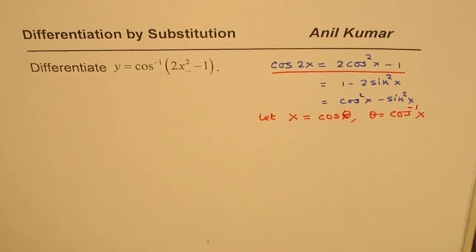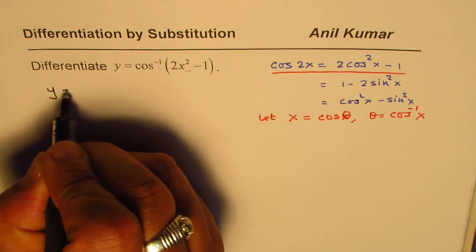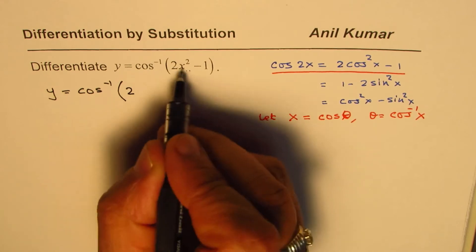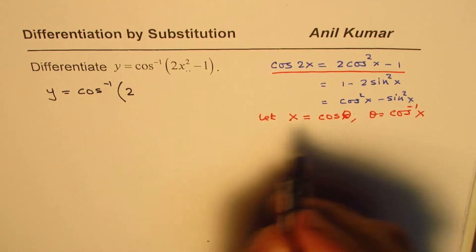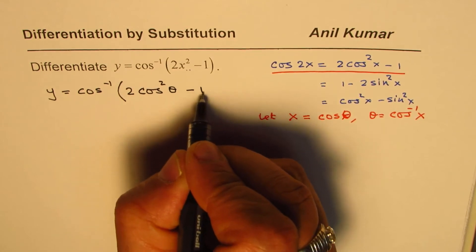So now the question is, y equals cos inverse of 2 times, instead of x, I am writing cos theta. So it gives 2 cos square theta minus 1.